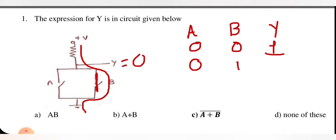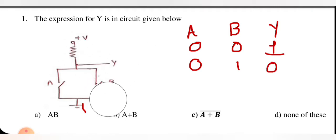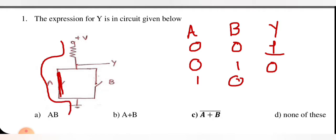For the third case, if A is equal to 1 and B is equal to 0, then input A equal to 1 will be short. The current will flow to ground, so the voltage here will be low. If both inputs are 1, then both are short and our current will go to ground, so the output will be 0.